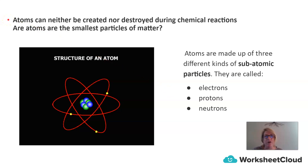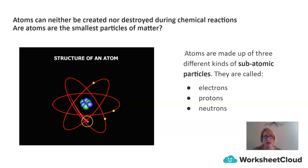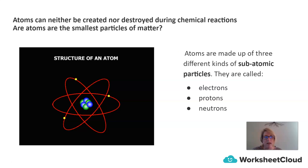Atoms can neither be created nor destroyed during chemical reactions. Are atoms the smallest particles of matter? Here we have a structure of an atom. Atoms are made up of three different kinds of sub-atomic particles: electrons, protons, and neutrons.